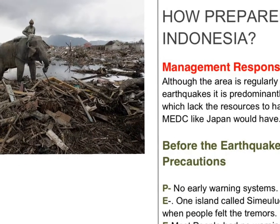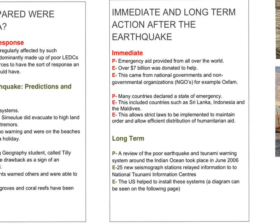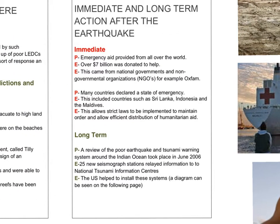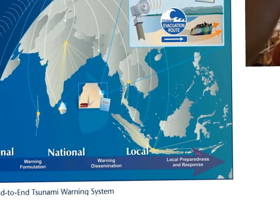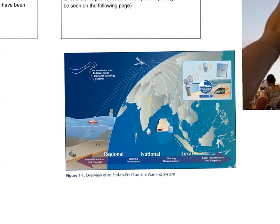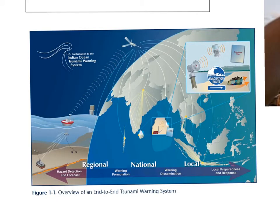If you are asked about responses, you could be asked about short-term or long-term. The immediate impacts were predominantly aid-based. Emergency aid was provided from all over the world — over 7 billion dollars was donated from a variety of governments and non-governmental organisations, for example Oxfam. In the long-term, they looked at strategies for predicting earthquakes and 25 new seismograph stations were involved. The diagram in your e-book shows how this works and how it helped to predict future earthquakes and give some sort of early warning.